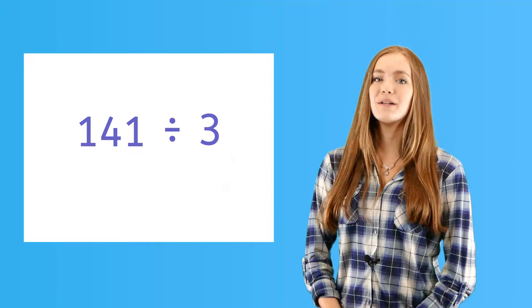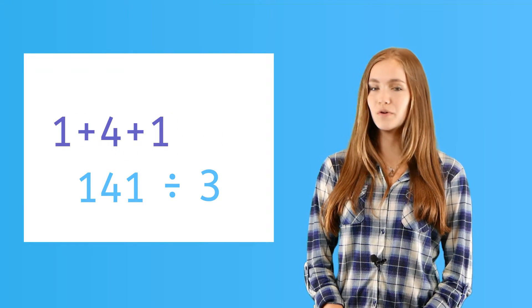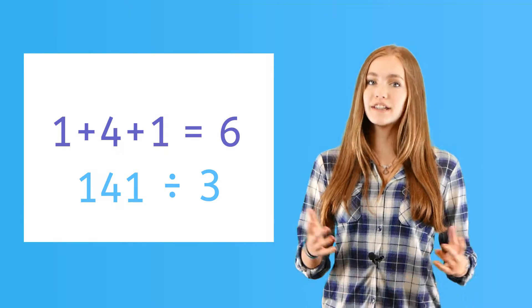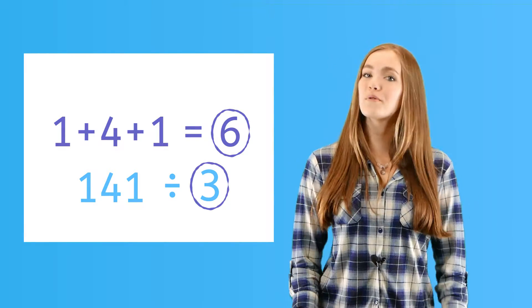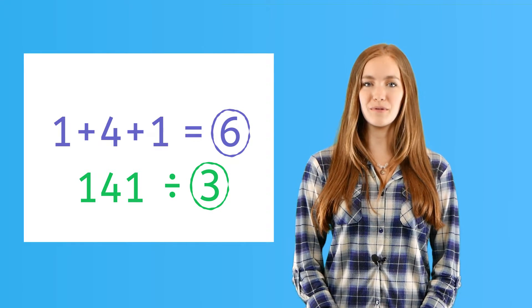141 divided by 3. We add up the numbers 1, 4, and 1, which is 6. And since we know that 6 is divisible by 3, that means 141 must be divisible by 3.